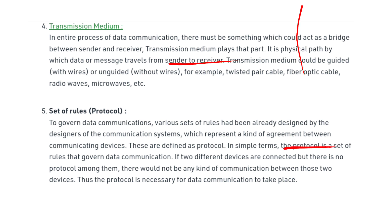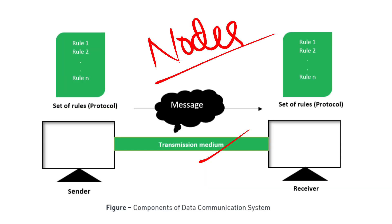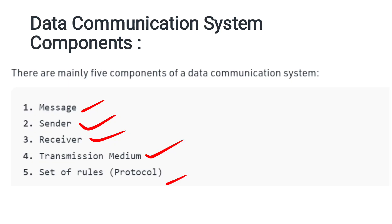The five components of a data communication system are: message, sender, receiver, transmission medium, and set of rules (protocol). The message is what we communicate; the sender sends it; the receiver is the destination device; the transmission medium is the physical path; and the protocol is the set of rules governing data communication.